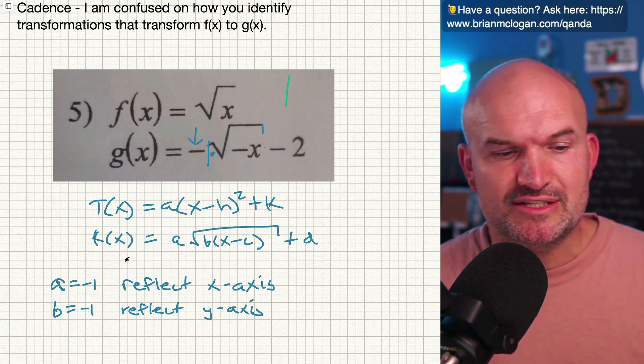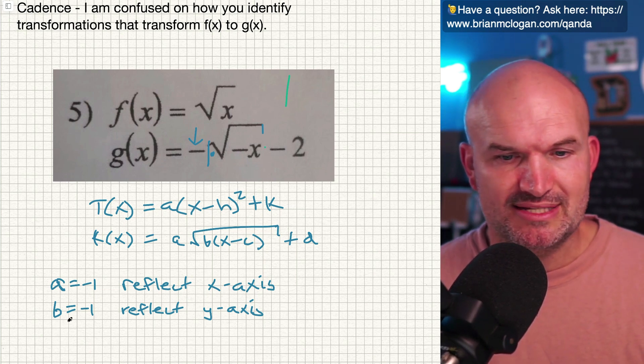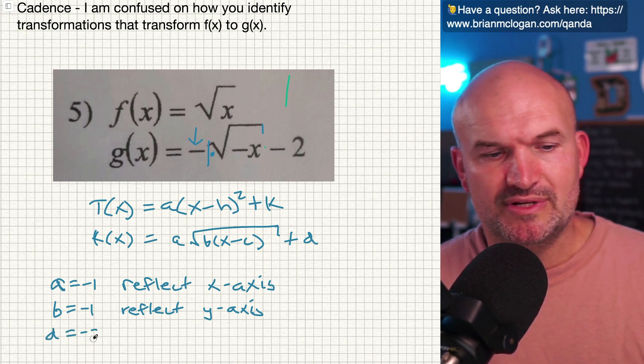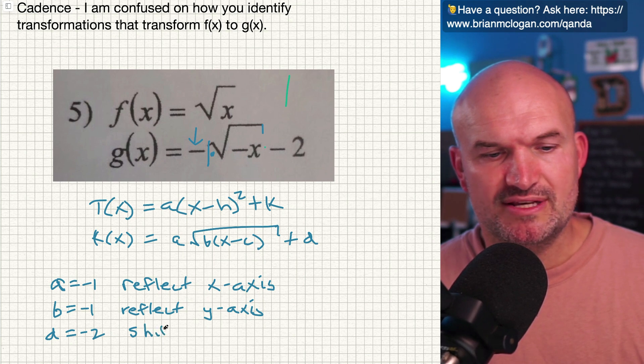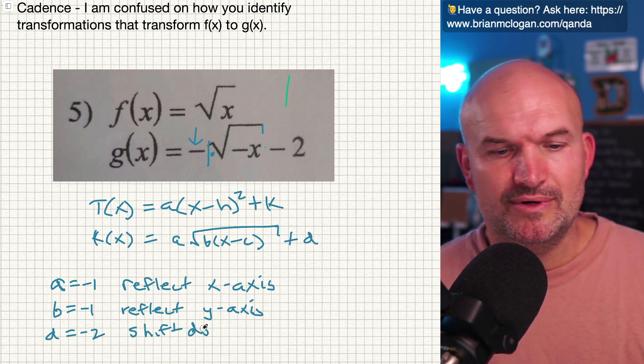And since it's a negative two, it's going to be down two units. So I can say my D is equal to negative two, and I can say shift down, shift down two.